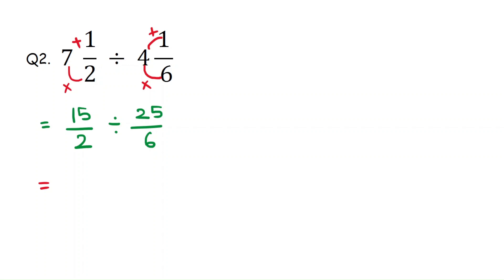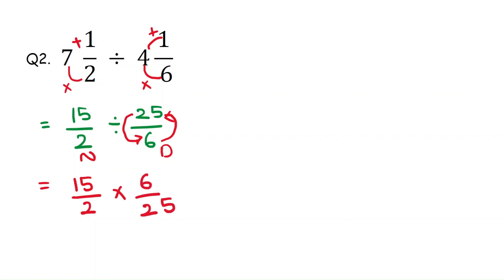Here, 15 over 2 is the numerator and 25 over 6 is the denominator. We write 15 over 2 times the reciprocal of the denominator, since the denominator is a fraction. That means 25 over 6 becomes 6 over 25. Now cross-multiplying: 5 times 3 is 15, 5 times 5 is 25, 2 times 1 is 2, and 2 times 3 is 6.